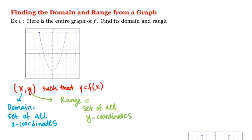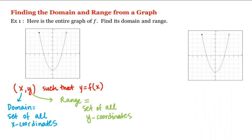Looking at our graph, what is the set of all possible x-coordinates of points on the graph? It's this interval here. Think of projecting the graph onto the x-axis and we'll get this interval. Notice that if we go further to the right, there's no point on the graph with those x-coordinates. Or if we go further to the left, there's no point with those x-coordinates either. So our domain is this interval: negative 3 up to 3.